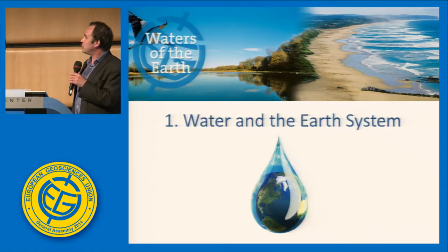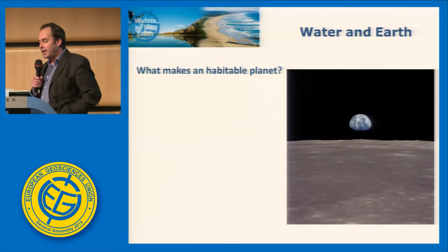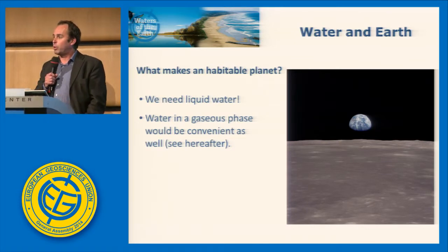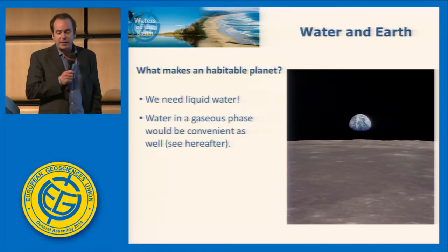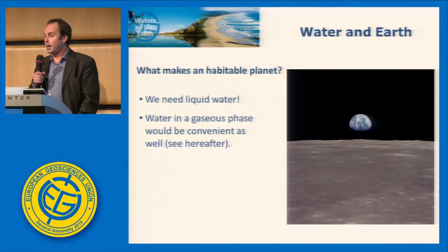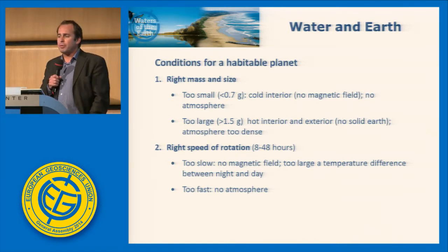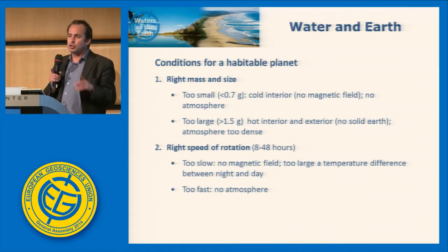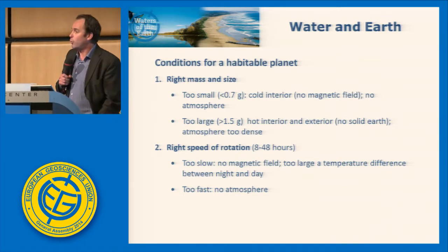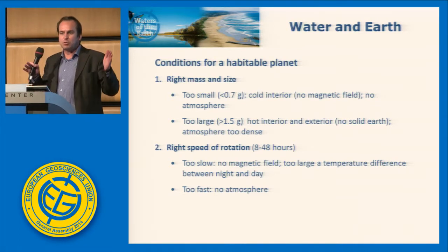When we talk about water and the Earth's system, the first question one might ask is: what makes a habitable planet? One of the definitions of a habitable planet is that there should be liquid water, at least if we expect life as we know it. It would also be convenient to have water in the gas phase. Water plays a role in making that margin as wide as possible.